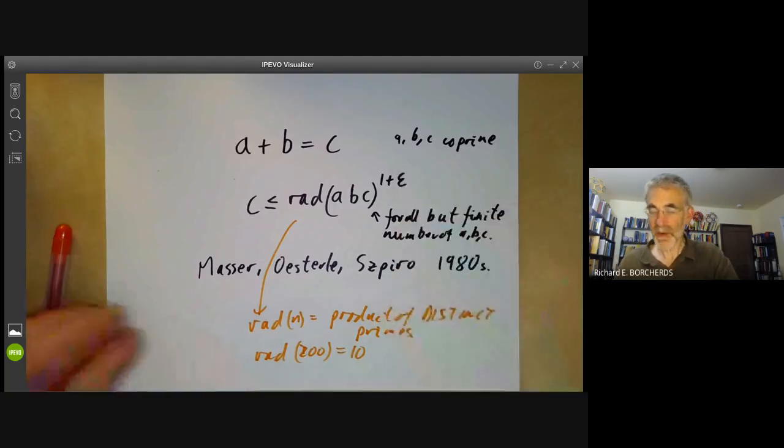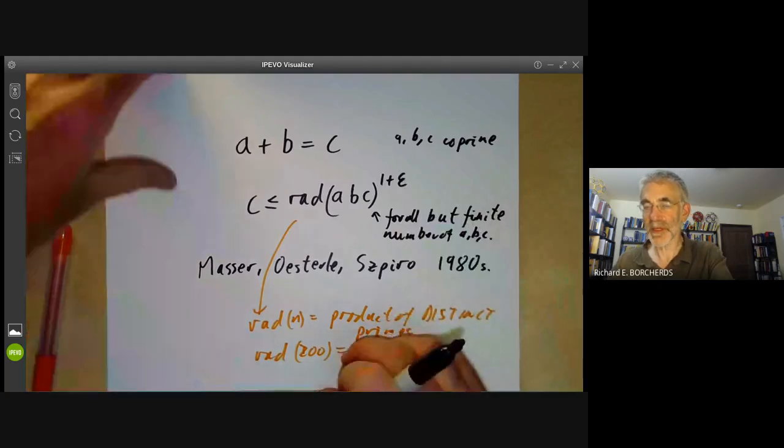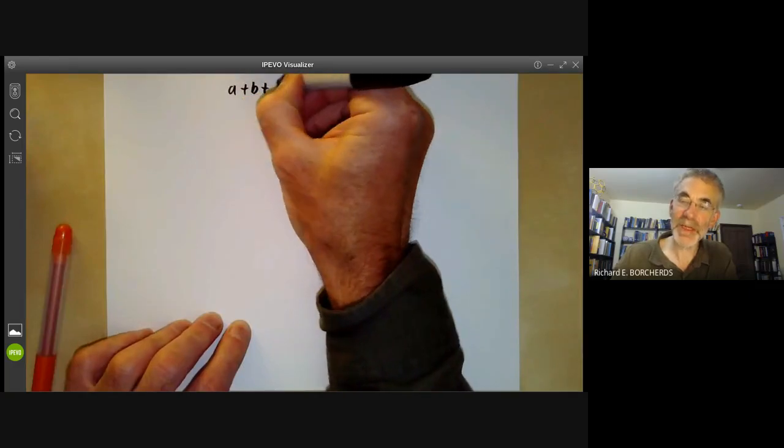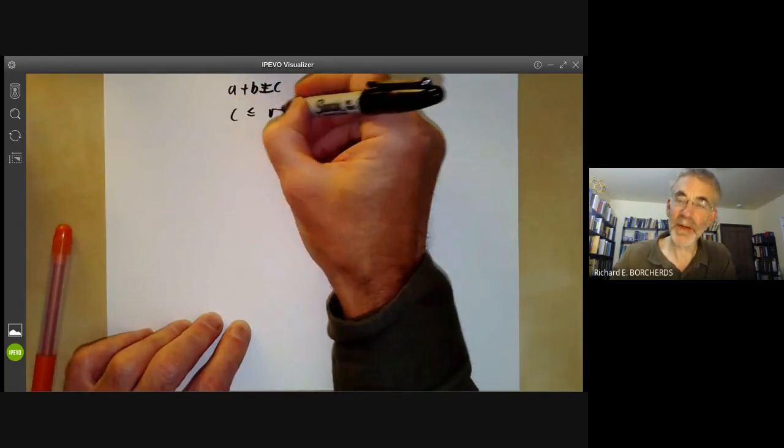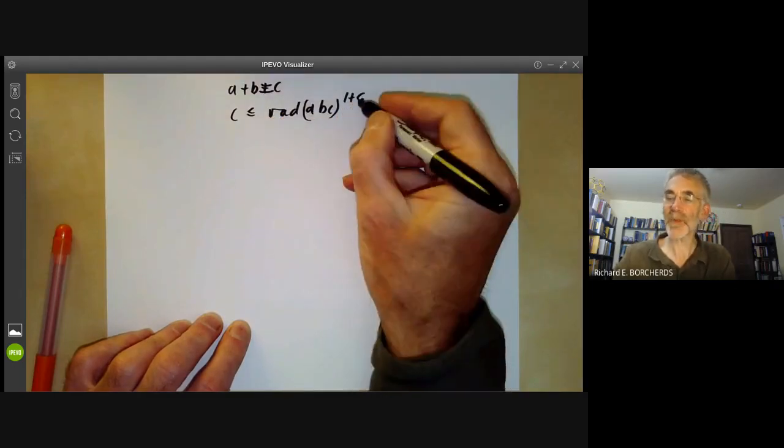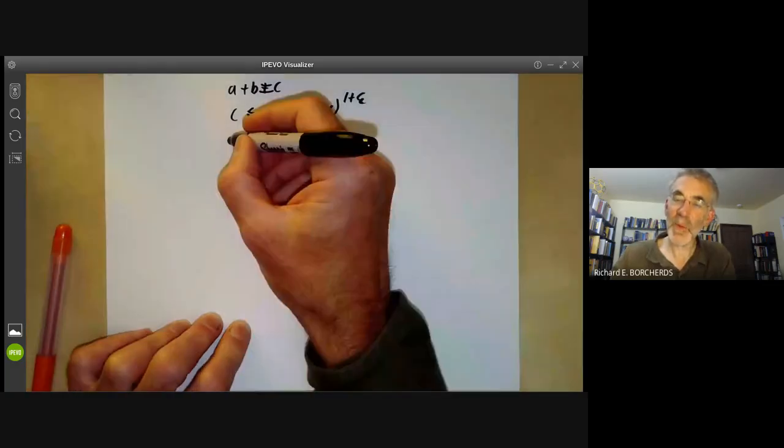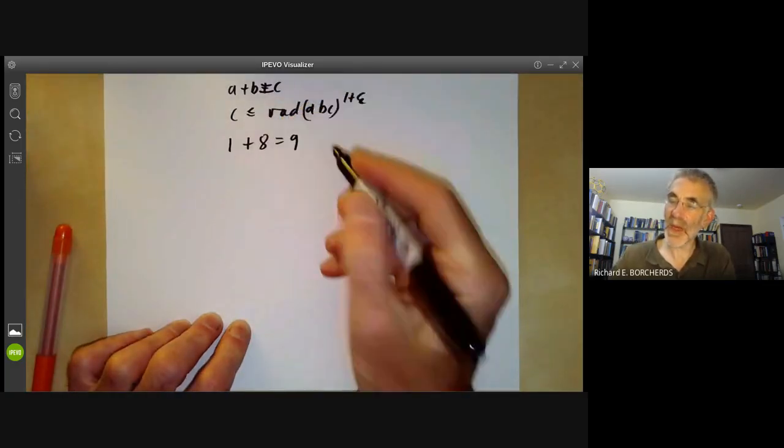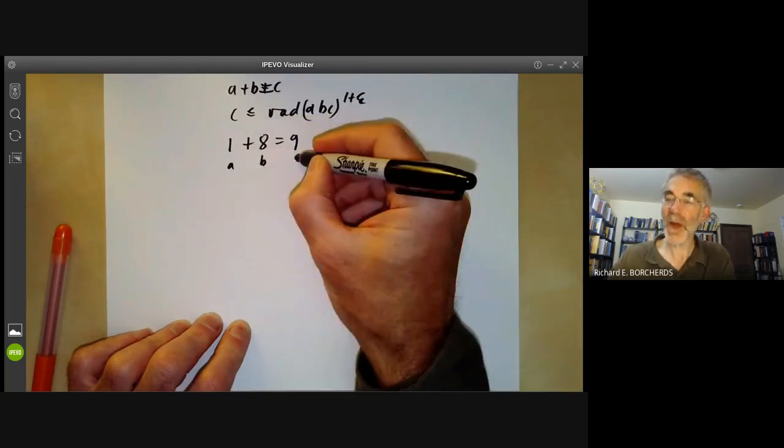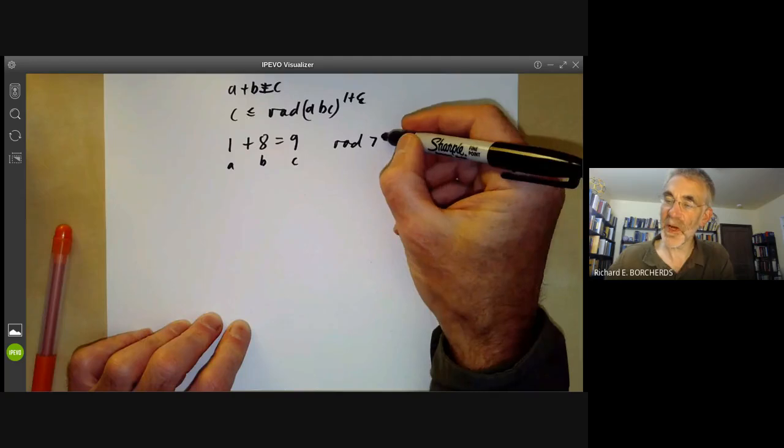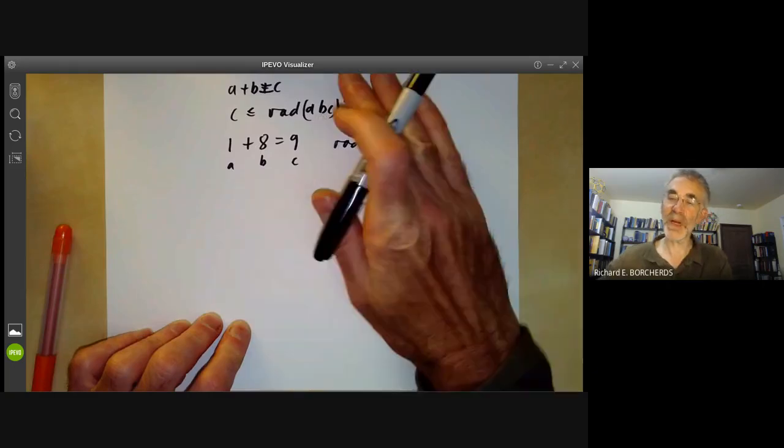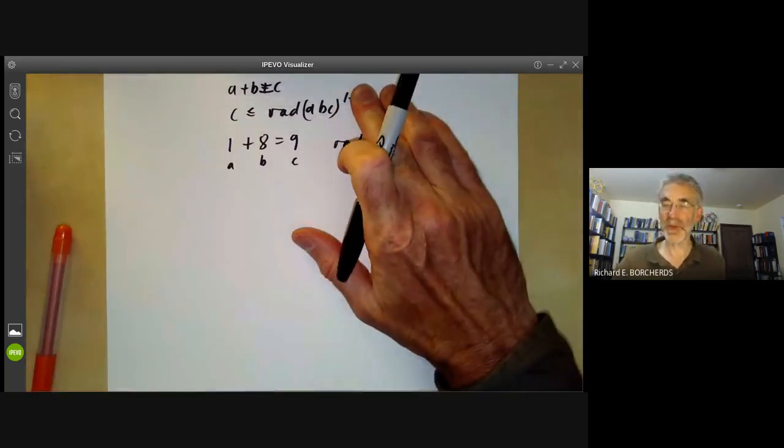So let me give a few examples to explain this. So we have A plus B equals C and we want C is less than or equal to the radical of ABC to 1 plus epsilon. Well why do we need this number epsilon here? Well we can have things like 1 plus 8 equals 9 and here the radical of ABC is the radical of 72 which is 6 and C is definitely bigger than 6. So if we didn't put this number epsilon in here the ABC conjecture would just be false.